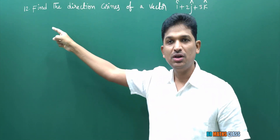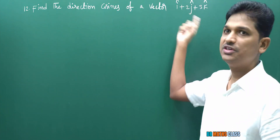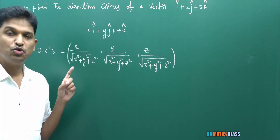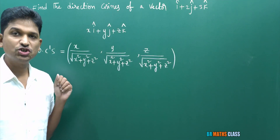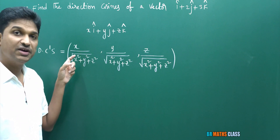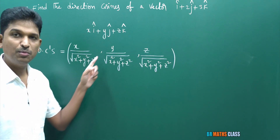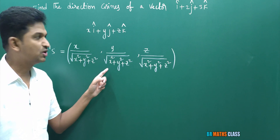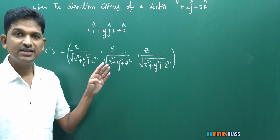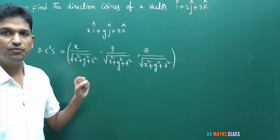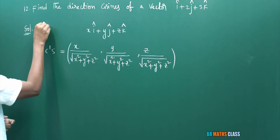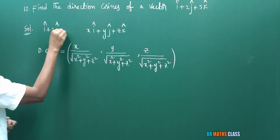Observe question number 12. What to calculate? Find the direction cosines of this vector. You need to learn the formula for direction cosines of a vector. The direction cosines of a vector xi cap plus yj cap plus zk cap are: x divided by √(x²+y²+z²), y divided by √(x²+y²+z²), and z divided by √(x²+y²+z²). Here, the given vector is i cap plus 2j cap plus 3k cap.